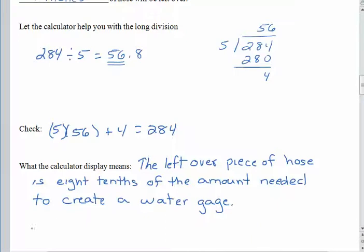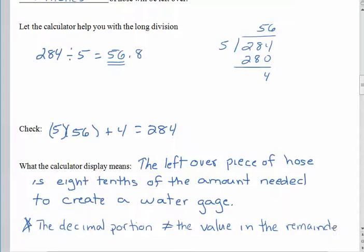So the big deal here, huge star, is that the decimal portion does not visually match the value in the remainder. To find the remainder, we actually have to do some subtraction.